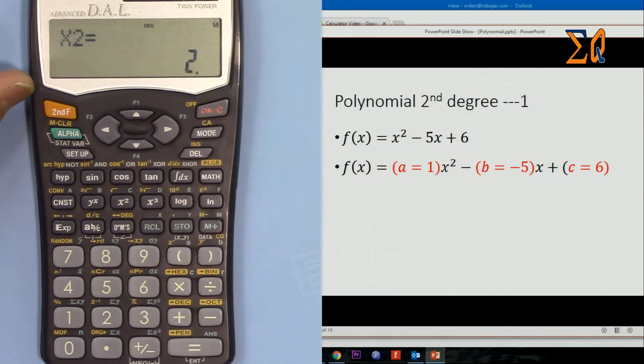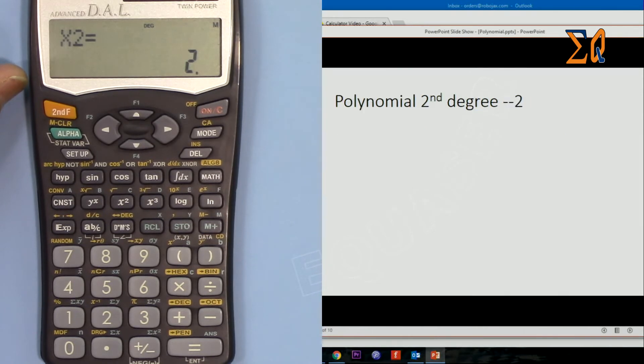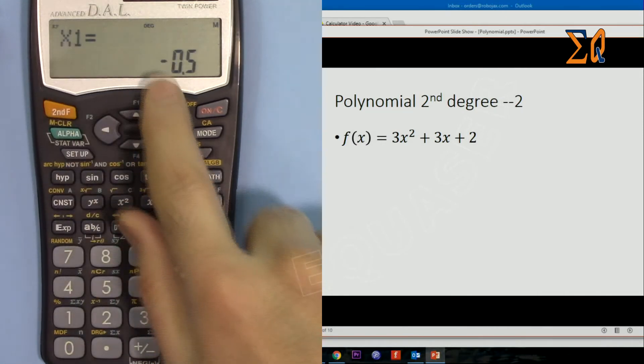Let's go for the next. This calculator doesn't show the vertex format. Now we have 3x² + 3x + 2. Because it's the same second degree, I just press equal sign. It asks for a, so 3, then b is 3, and c is 2.